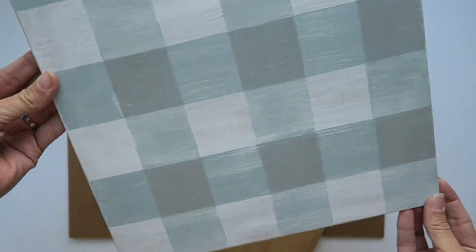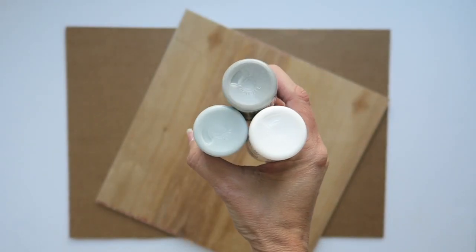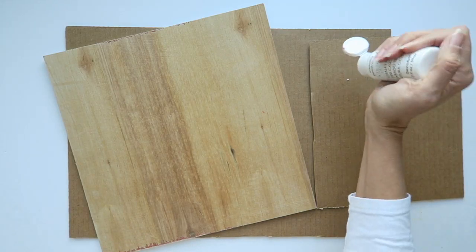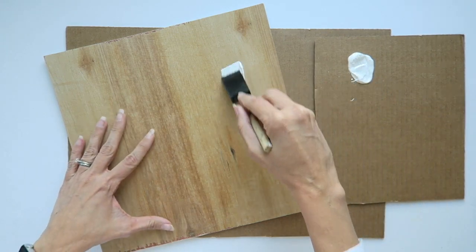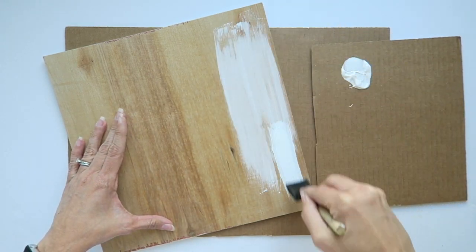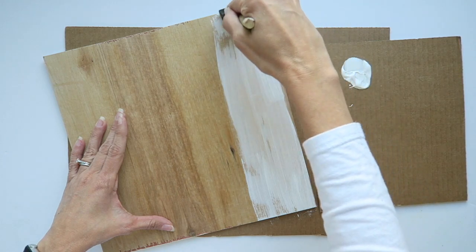Let's talk about how to paint buffalo plaid. It's easier than you think. You're going to need three different paint colors: a light, a medium, and a dark. Start with your light color and paint your surface completely with the light color.